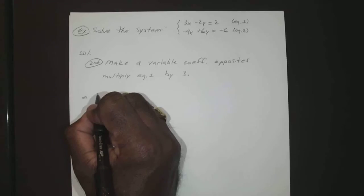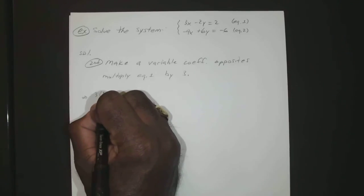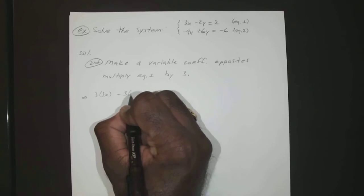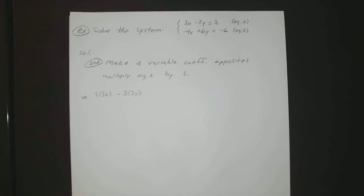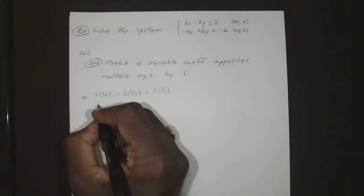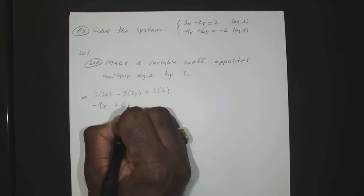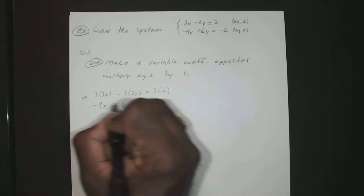Okay, so that would give us 3 times 3x minus 3 times 2y equals 3 times 2. Now the easiest mistake to make is to forget to multiply the other side of the equal sign. You want to make sure you get both sides. And -9x + 6y = -6.